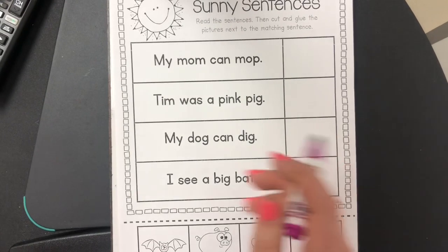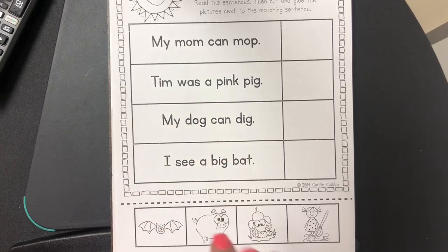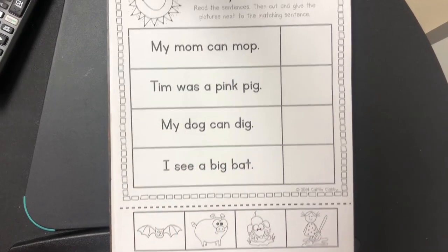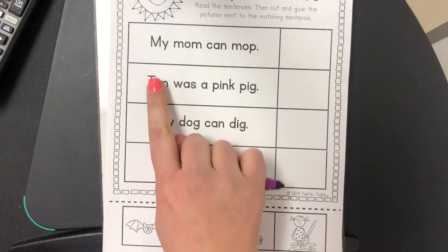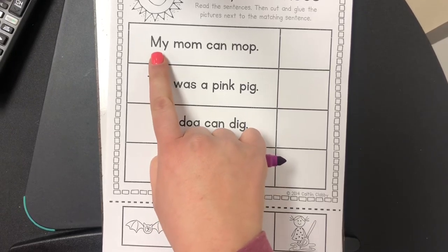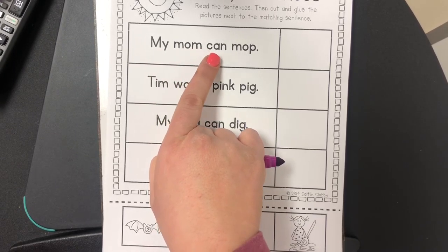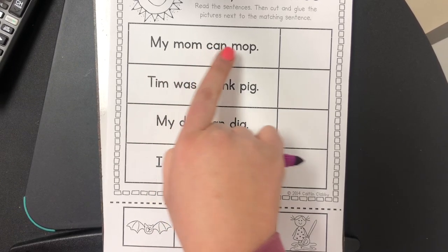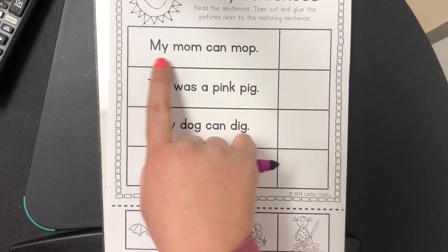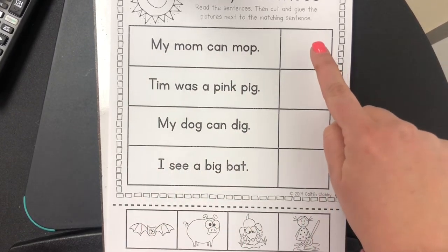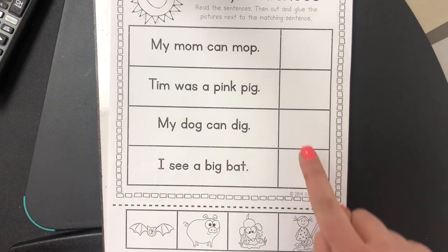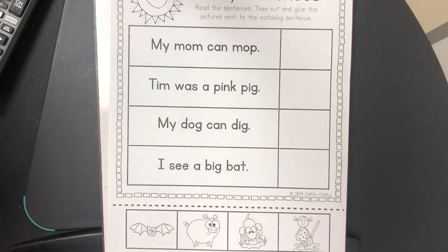On Wednesday you're going to be reading the sentence, and then there's a picture to match the sentence. For example, this one says 'My mom can mop.' Read the sentence and then cut the picture out and glue it on where it belongs over here.